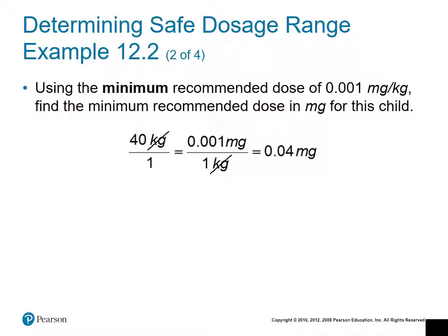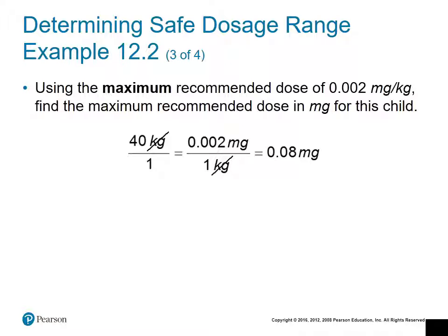We take the child's size — 40 kilograms — and multiply it by the low end of the safe dose range, 0.001 milligrams per kilogram, giving us 0.4 milligrams as the low end. Then we do the same for the high end: 40 kilograms multiplied by 0.002 milligrams per kilogram gives us 0.8 milligrams as the high end of the safe range.